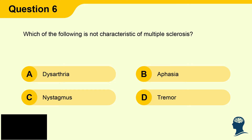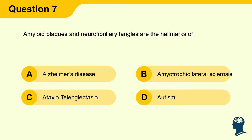Question 7: Amyloid plaques and neurofibrillary tangles are the hallmarks of: A) Alzheimer's disease, B) Amyotrophic lateral sclerosis, C) Ataxia telangiectasia, D) Autism.